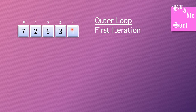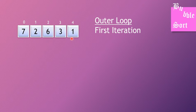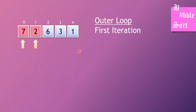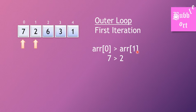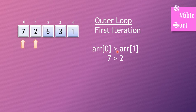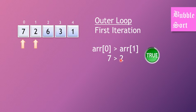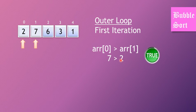We are going to start with the outer loop — that is the first iteration. First, it will take the first two elements and compare them. ARR of zero will be checked with ARR of one. Since we are sorting in ascending order, if the first number is greater than the second number, we swap. Here seven is greater than two, so the condition is true and we swap the values — the second element goes to the first place and the first element goes to the second place.